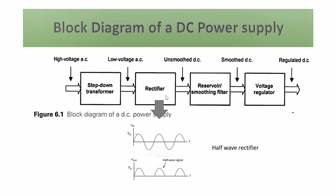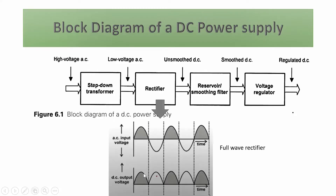Looking at the output waveform: one full cycle consists of one positive half cycle and one negative half cycle. In the half-way rectifier, output is obtained only in the positive half cycle; during the negative half cycle the output is zero — hence it is called a half-way rectifier, as we get output voltage only for half the cycle. In a full-way rectifier, output is obtained in both the positive and negative half cycles across the entire cycle.